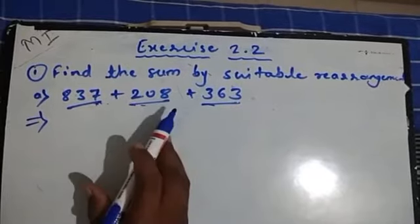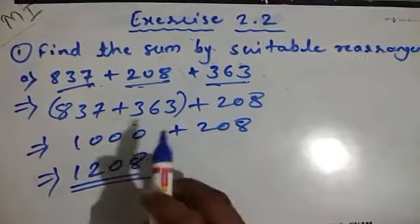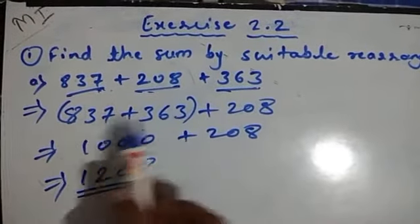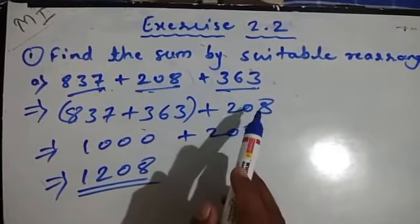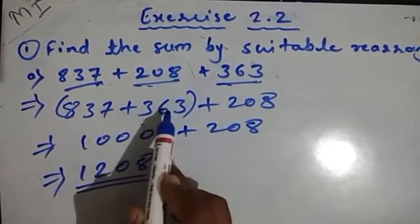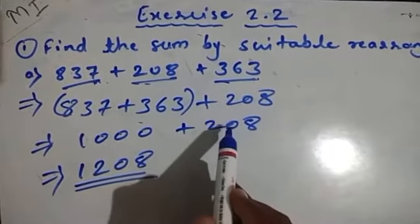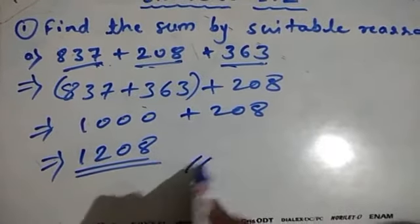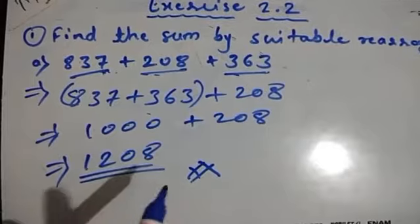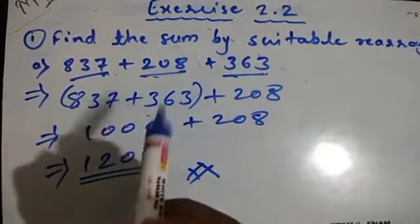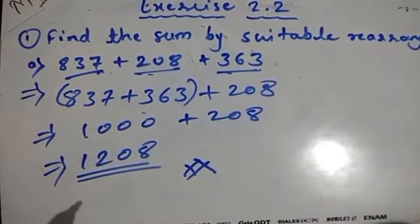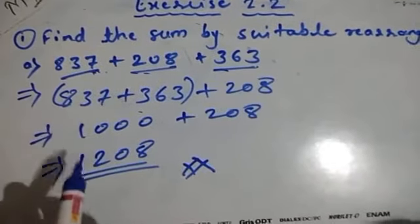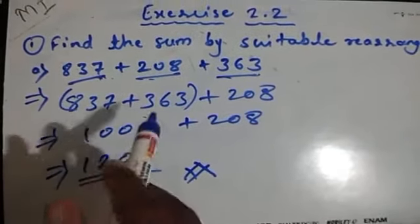We add 837 and 363 first — grouping them separately — and keep 208 aside. 837 plus 363 is 1000, and then adding 208 gives 1208 as the final answer. What we did here is use the commutative property as well as the associative property — we changed the groups and the order to make the problem easy and solve it very fast.